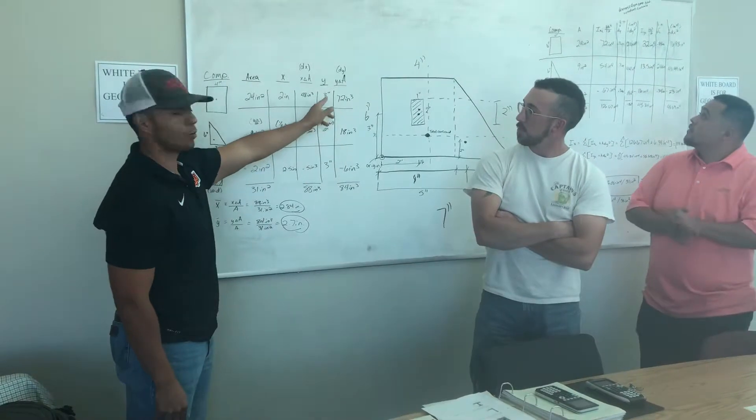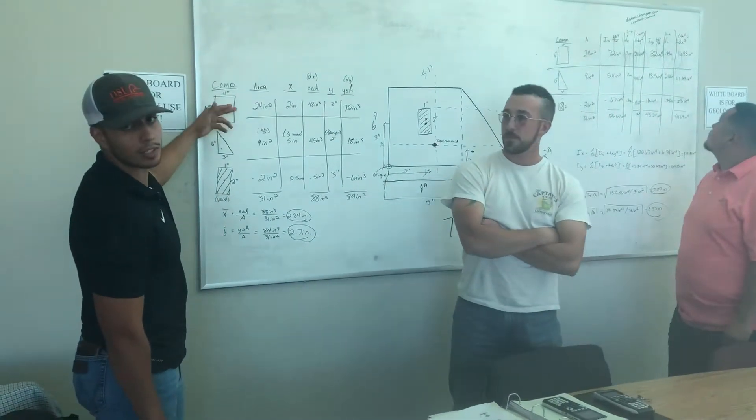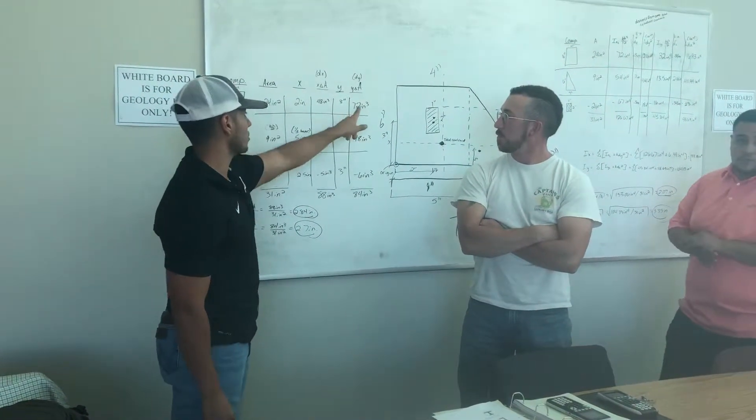Then you do the same thing for Y. You've got 3 inches away from the top, so you divide 6 by 2. You do the same thing, multiplying your Y times your area, which gives you 72.